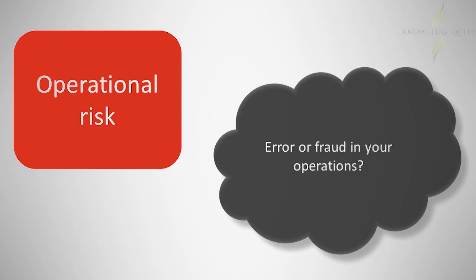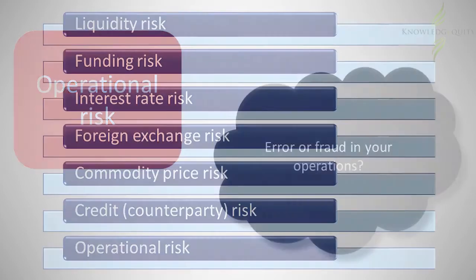When dealing with financial risks, it can be helpful to visualise the type of business, the transaction or cause of the risk, and the objective or outcome that the business is trying to achieve. It is only when you have this working understanding that it is possible to implement appropriate risk management strategies.